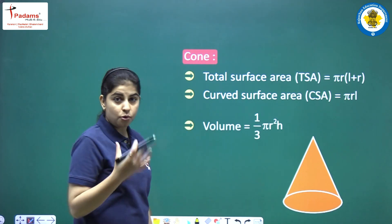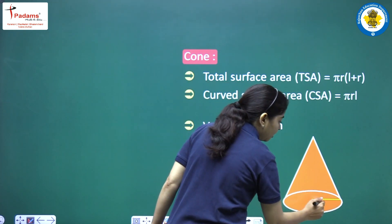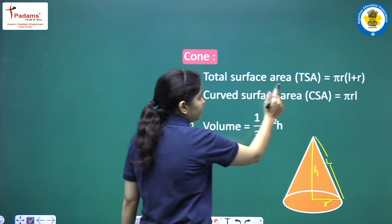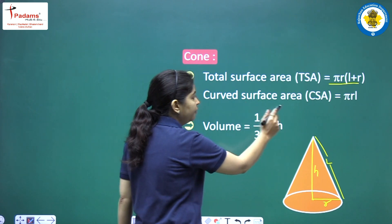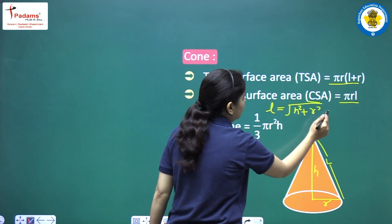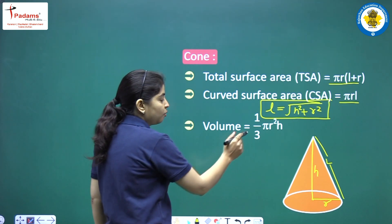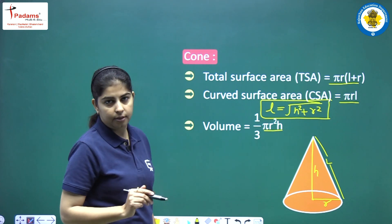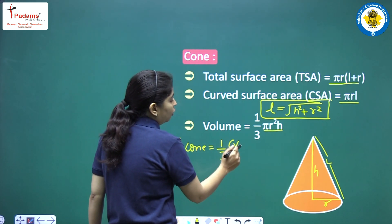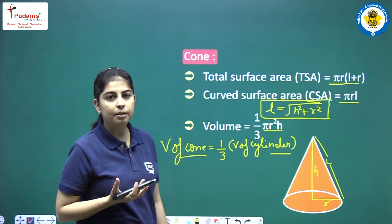Next, cone — like an ice cream cone or a joker's cap. A cone has radius r, height h, and slant height l. The total surface area is πr(l + r). The curved surface area is πrl, where slant height l = √(h² + r²) — this is a very important formula. The volume of a cone is (1/3)πr²h. An important relationship: volume of cone = (1/3) × volume of cylinder.